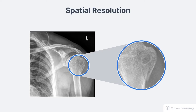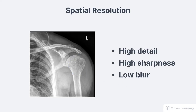Several terms are sometimes used to describe spatial resolution. An image with high spatial resolution might be described as having high detail, high sharpness, or low blur.